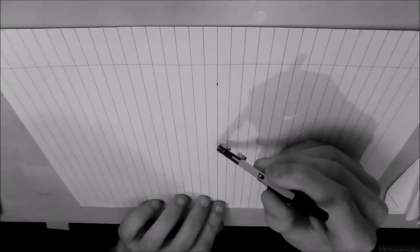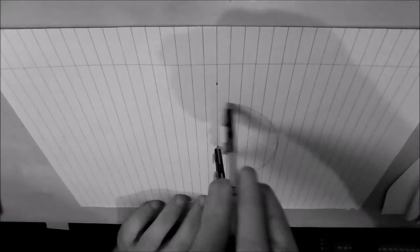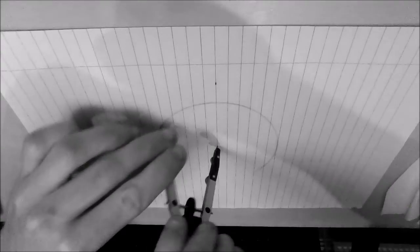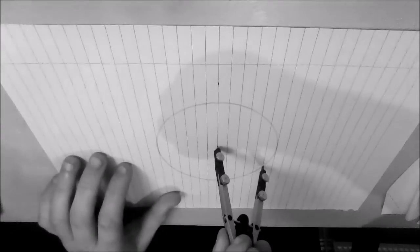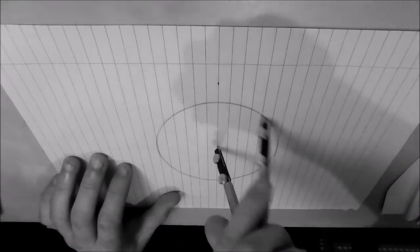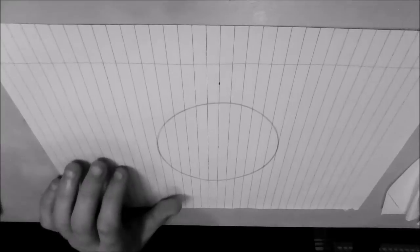Next thing to do is take your compass, put it on the center dot, and just draw a circle around it like so.